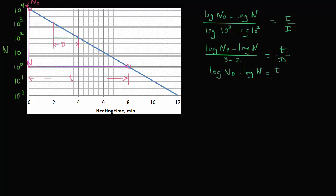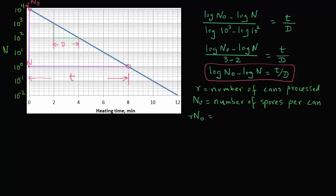So we will use this expression to develop our expression for the spoilage probability. So let's say r represents the number of cans that are thermally processed, and n0 is the number of spores per can. Then r times n0 will equal the total number of spores at the beginning of the thermal process.